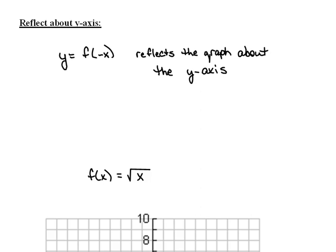Okay, now let's see what happens for us to be able to reflect things about the y-axis. So again, we have our definition here that says y equals f of negative x reflects the graph about the y-axis.